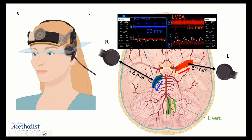Through the right temporal bone window, we monitor the P2 segment of the right posterior cerebral artery. The right and left vertebral arteries merge into the basilar artery, which then divides into the right and left posterior cerebral arteries. This allows us to detect emboli flowing through the left subclavian and vertebral arteries when inserting and deploying the left subclavian side branch stent graft. A drop in the right P2 PCA blood flow could indicate unintentional coverage of the left vertebral orifice even before performing a fluoroscopy-guided angiogram.